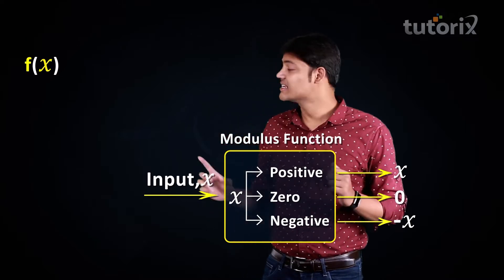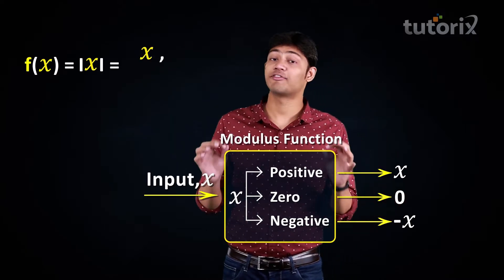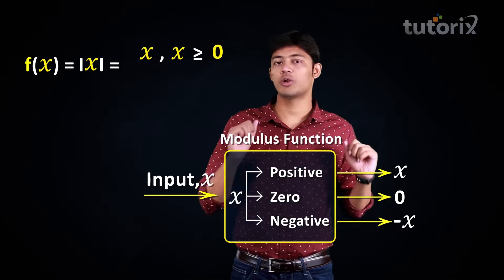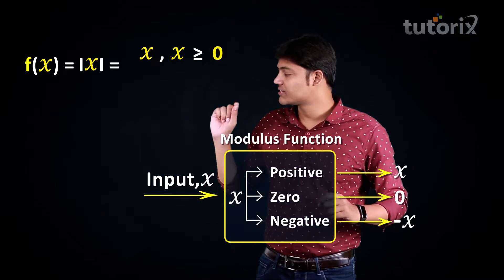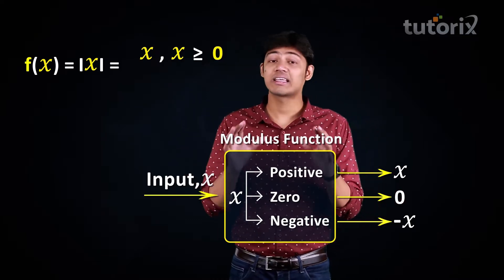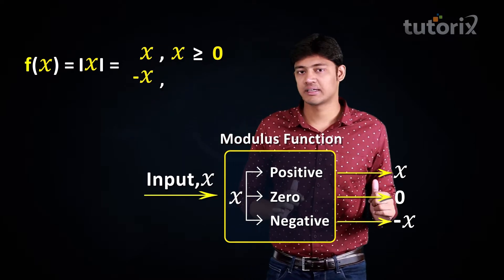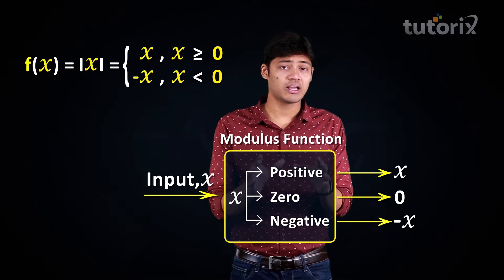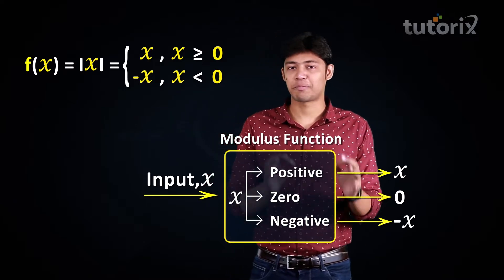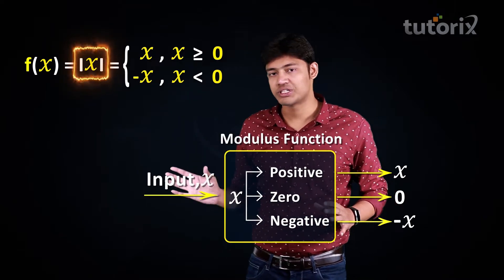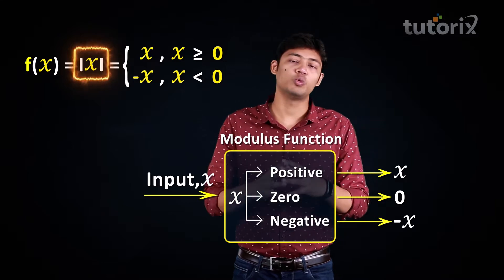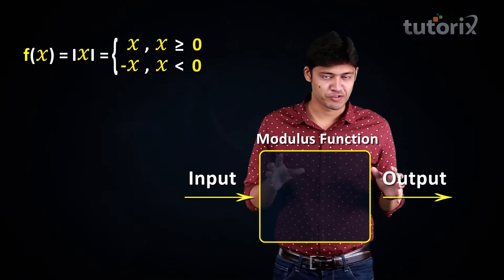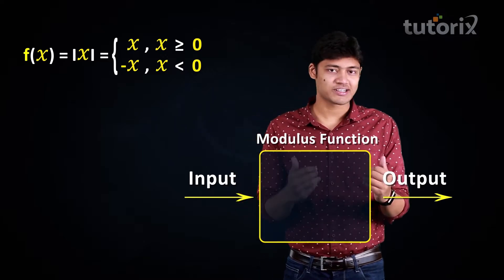To summarize: the modulus function f(x) equals X if X is greater than or equal to zero, and f(x) equals minus X if X is less than zero. The modulus function is represented as X between two vertical lines — the absolute value notation.